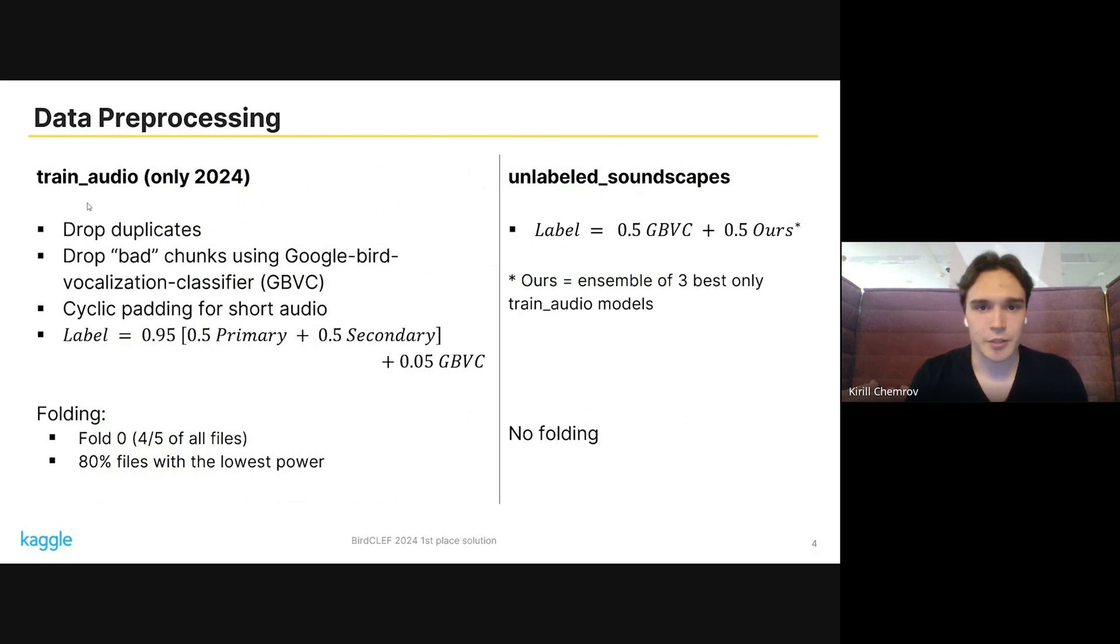There are also some bad chunks in the data, for example chunks with no calls or with high level of noise. To discard them manually is a tough task, so we use a Google BERT vocalization classifier. We make several labels and compare them with primary and secondary labels, and if they do not match for some chunks, we discard such chunks.